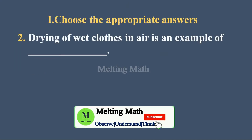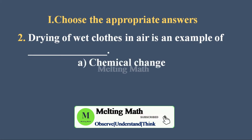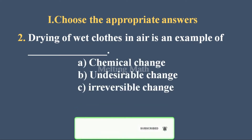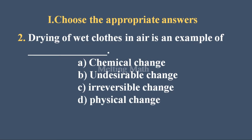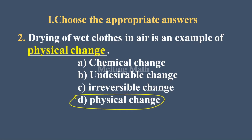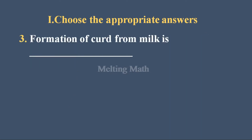Question two — drying of wet clothes in air is an example of: a) chemical change, b) anti-cerebral change, c) irreversible change, or d) physical change. Definitely it's a physical change, because you can notice at home that a wet cloth looks slightly different in color, and when dried it looks slightly different — this is because of physical appearance only. So the answer is physical change.